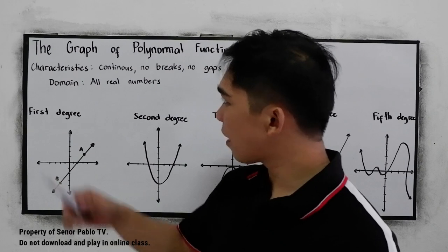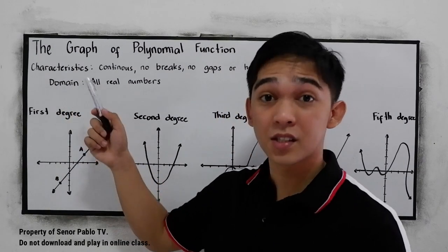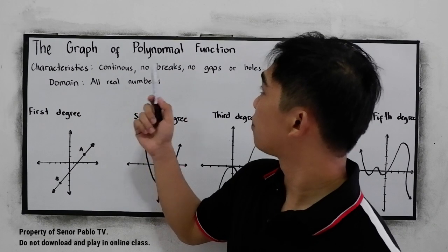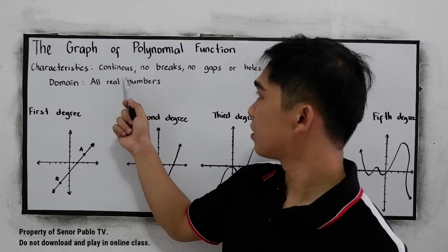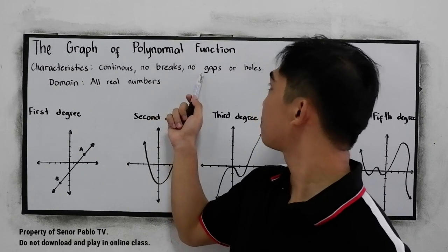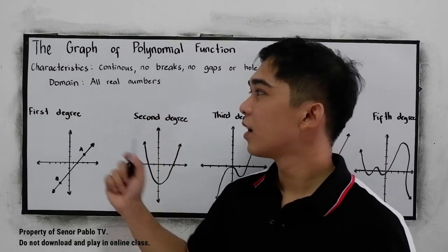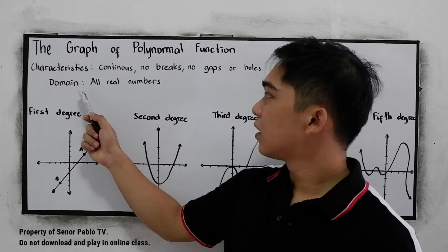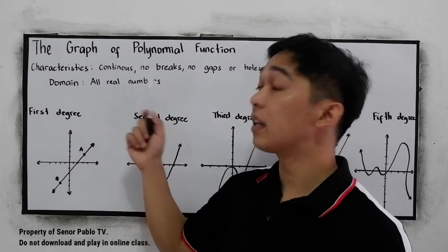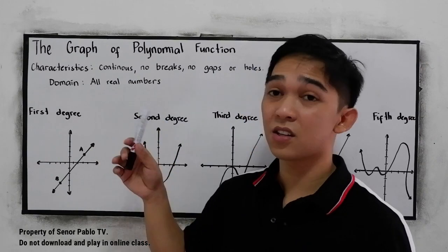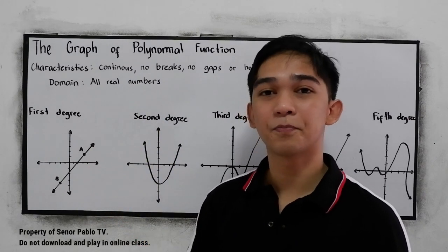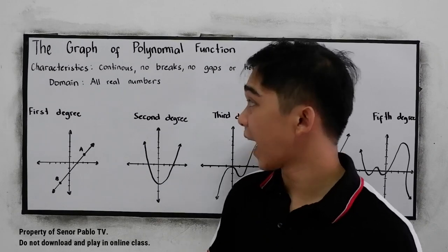So let's first define its characteristics. The characteristics of the polynomial function graph is it is continuous, no breaks, no gaps, or no holes. And its domain are all real numbers. So that means all real numbers, it touches our x for the coordinate, the possible values for the x.